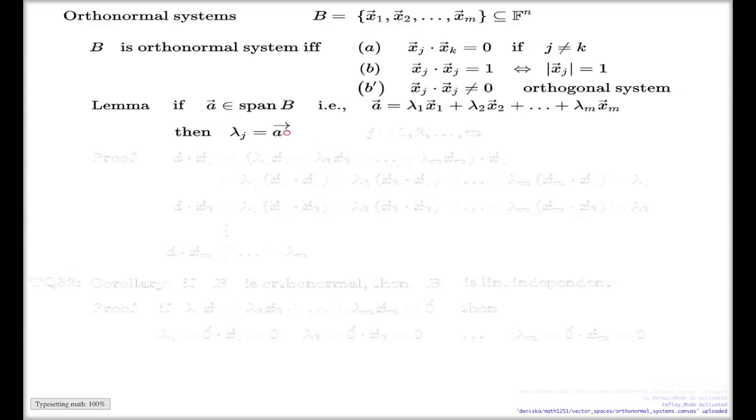These unknowns, lambdas, they simply can be delivered by taking the dot product of your vector ā, which came from a span, with each individual element of your system x̄ⱼ. And that is true for every j from 1 to m. As simple as this. That's where the simplicity of dealing with orthonormal systems comes handy.